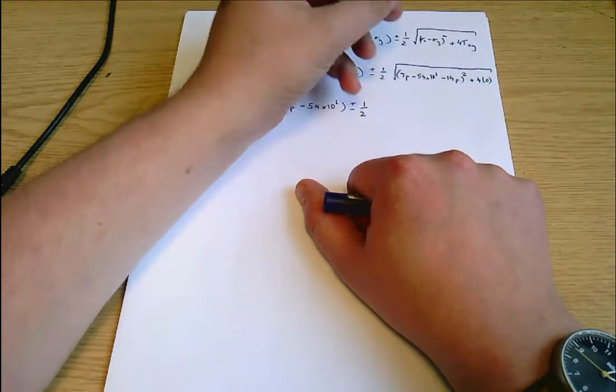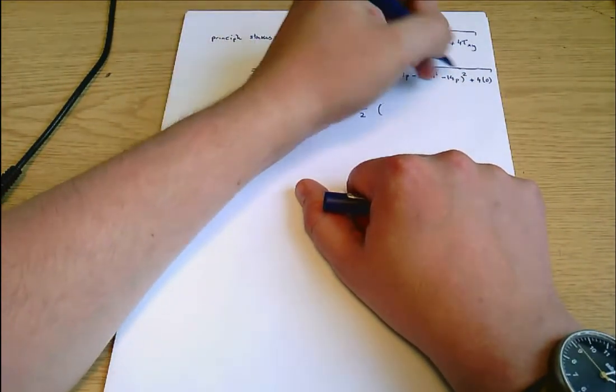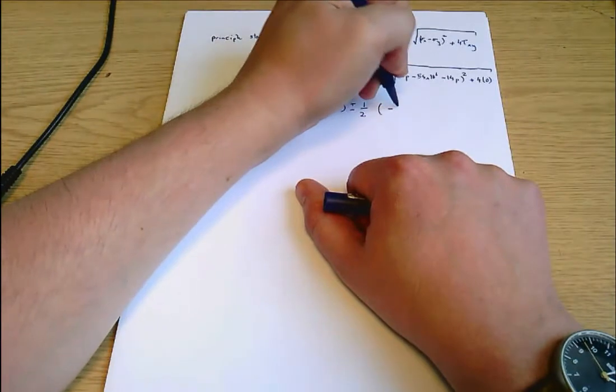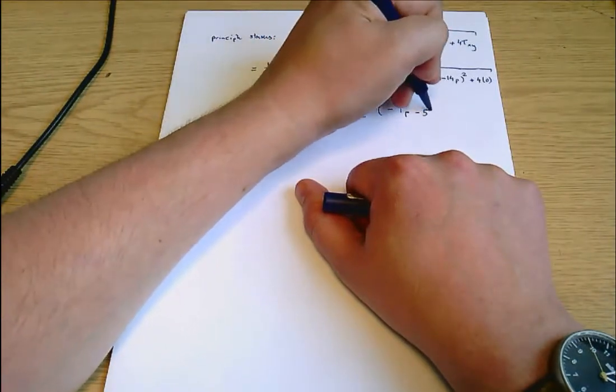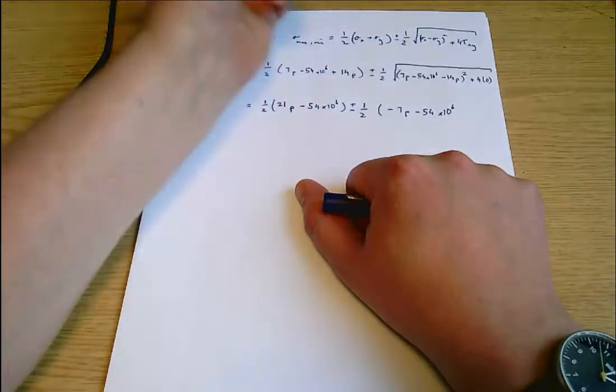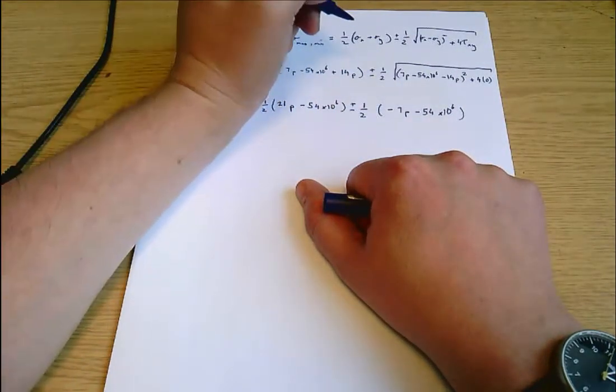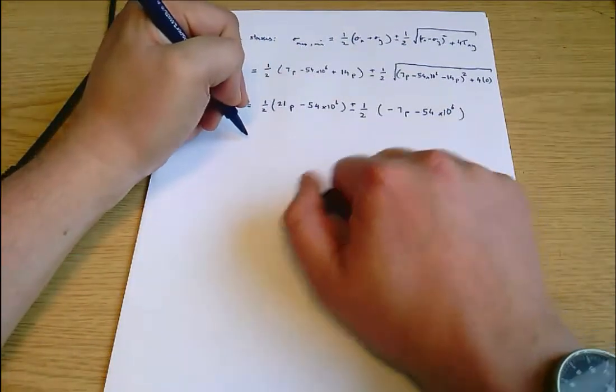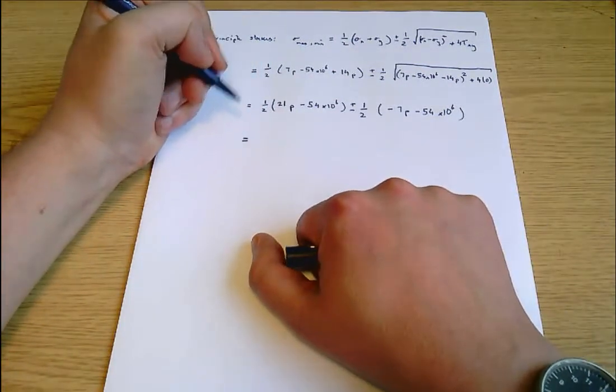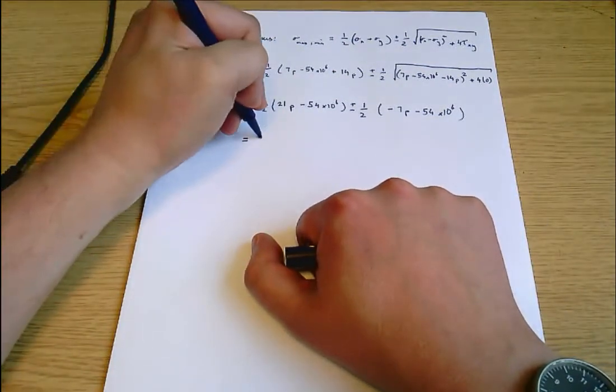Which equals one-half... plus or minus one-half, once I take into account that this term's zero, I've got the square root of something squared, so it's just going to be whatever's inside this bracket, which is minus 7P minus 54 times 10 to the 6. It doesn't matter because it's going to be plus or minus.